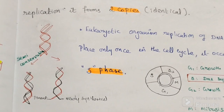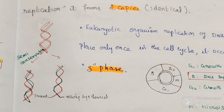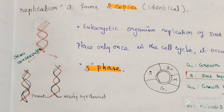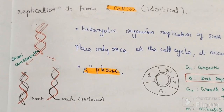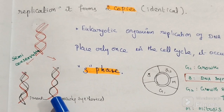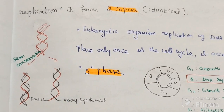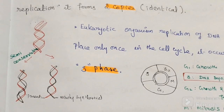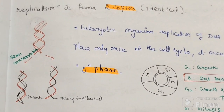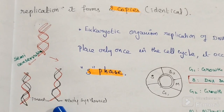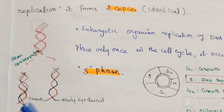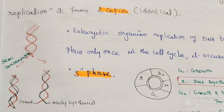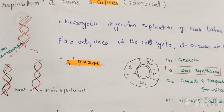What is the semi-conservative mode of replication? Both daughter DNA molecules are shown here — the black one is the daughter DNA. One strand comes from the parental DNA, shown in red, and the other strand is newly synthesized.